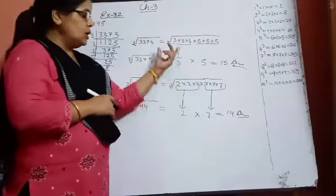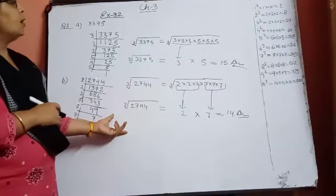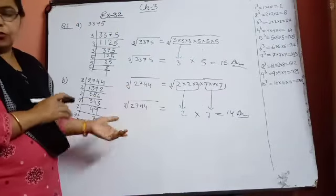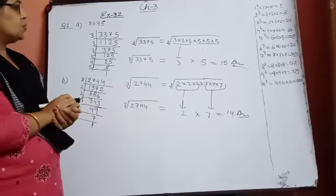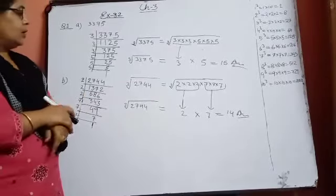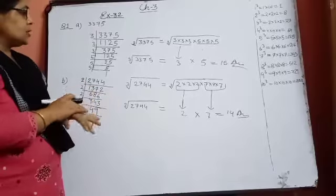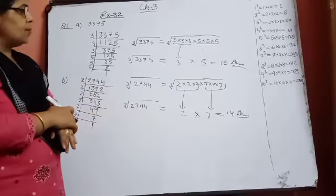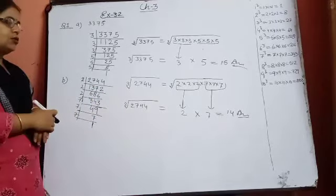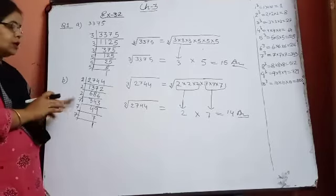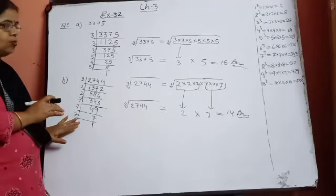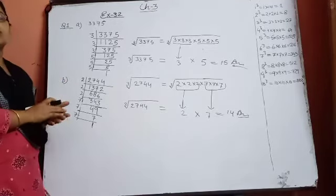Then 3 times 7 is 21, or 3 times 5 is 15. Again divide by 3: 3 times 1 is 3, and 3 times 2. Or 3 times 5 is 15. Then divide by 5: 5 times 2 is 10, 5 times 5 is 25. Then 5 times 1 is 5, 5 times 5 is 25. And finally 5 times 1 is 5. So the prime factorization is complete.